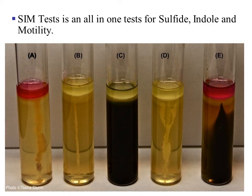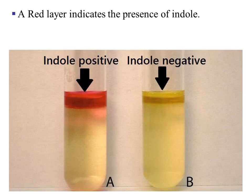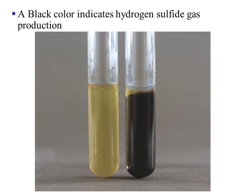In this slide, we will look at an additional test called the SIM test. It is an all-in-one test for sulfide, indole, and motility. The indole test shows a red layer on top of the media as a positive indicator. A black color is indicative of hydrogen sulfide gas production.